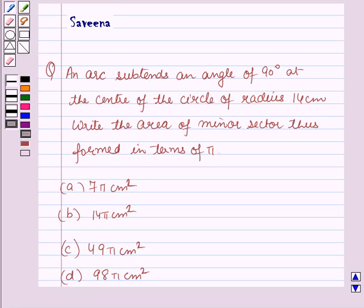Hello and welcome to the session. In this session, we will discuss a question which says that an arc subtends an angle of 90 degrees at the center of the circle of radius 14 cm. Write the area of minor sector thus formed in terms of π.